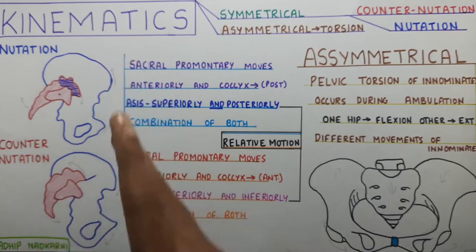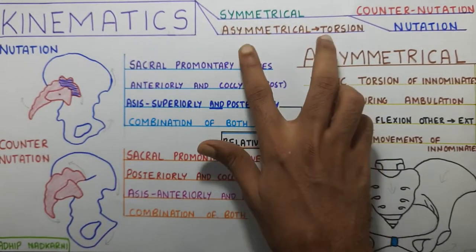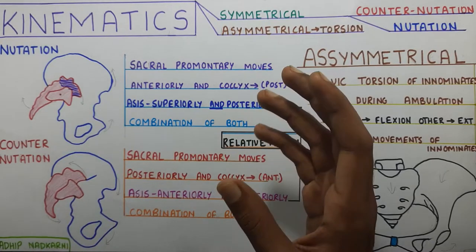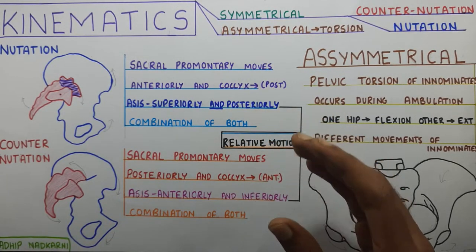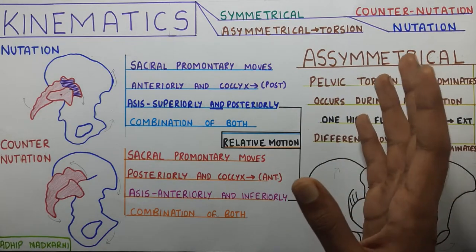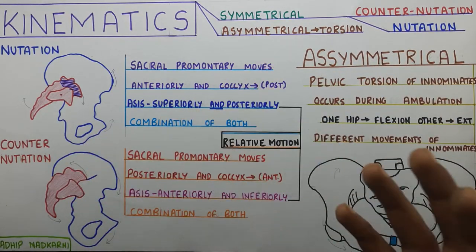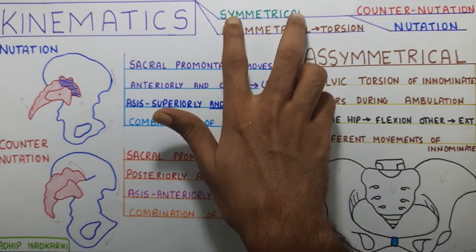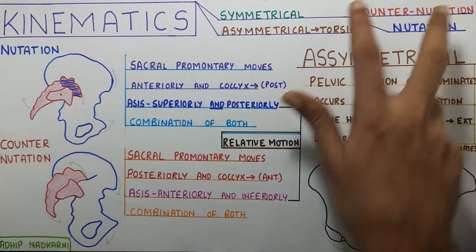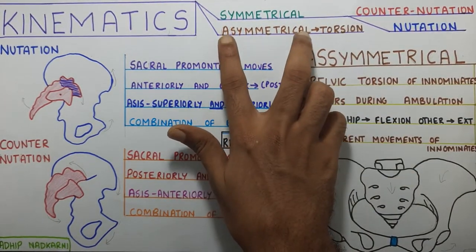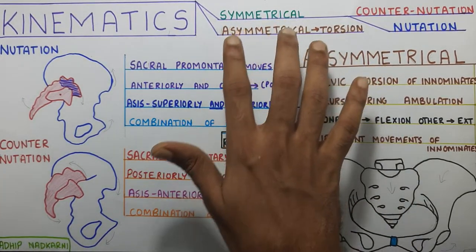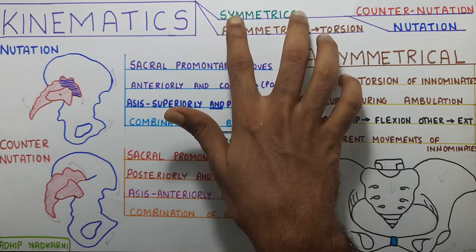Kinematics can be divided into symmetrical and asymmetrical movements at the SI joint. The movement at the SI joint is very minimal — hardly noticeable — but we are still going to look at how the movements exactly occur. Under symmetrical, you can divide it into nutation and counter-nutation. Under asymmetrical, there is torsion. We'll look at asymmetrical movements later; first we'll go on to the symmetrical movements.